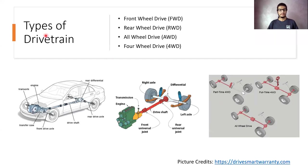Firstly, we will be looking at the types of drivetrain. We have four types of drivetrain available in the market: first is front wheel drive, second is rear wheel drive, then all wheel drive, and lastly four wheel drive.